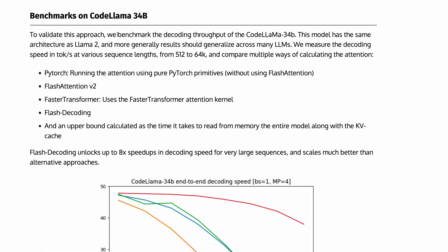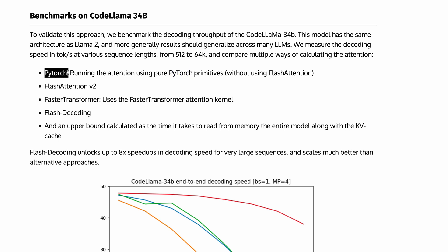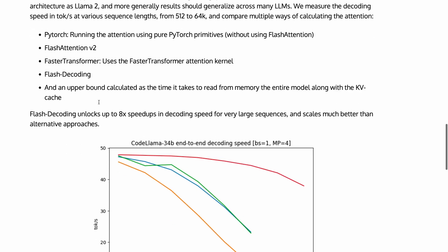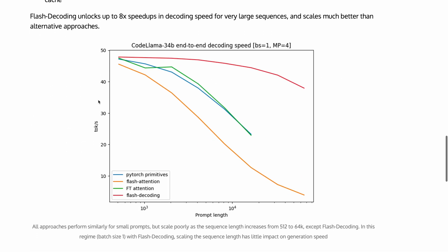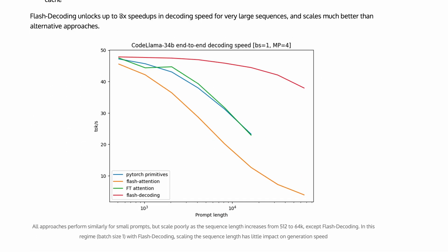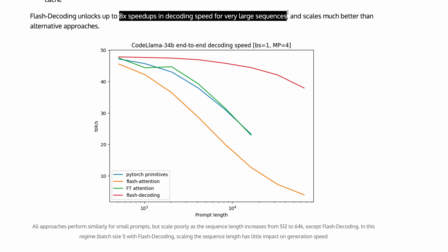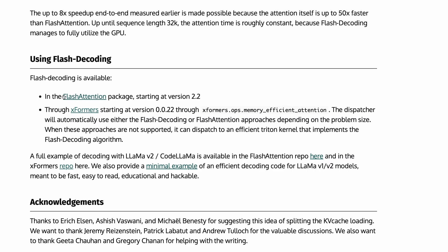Benchmarking the decoding throughput of CodeLlama 34B and comparing with PyTorch, flash attention, and flash transformer, they found that flash decoding unlocks up to 8x speedup in decoding speed for very large sequences. To use flash decoding, you can try out the flash attention and xformers packages.